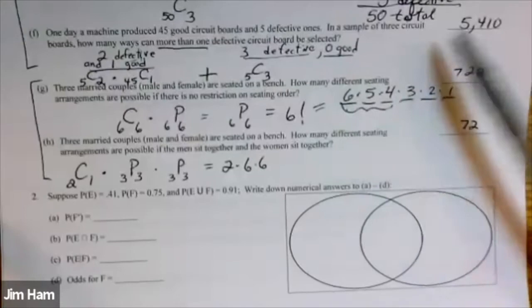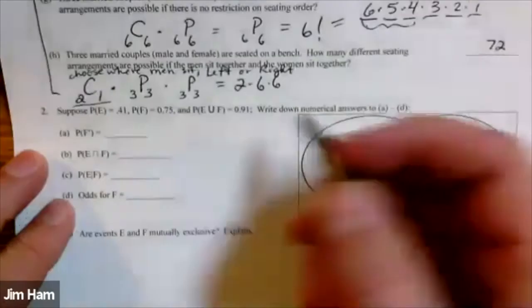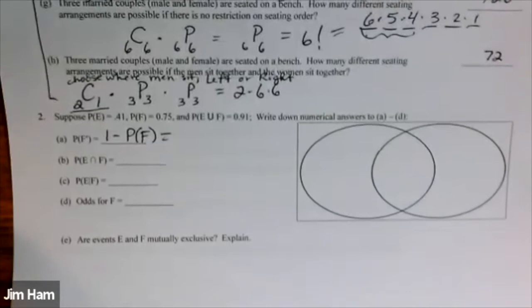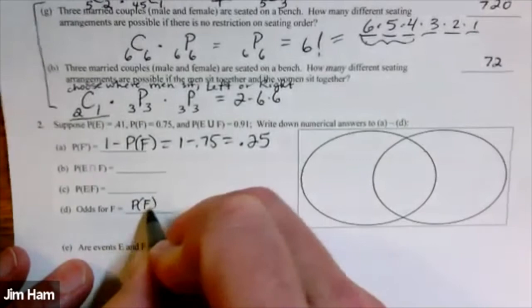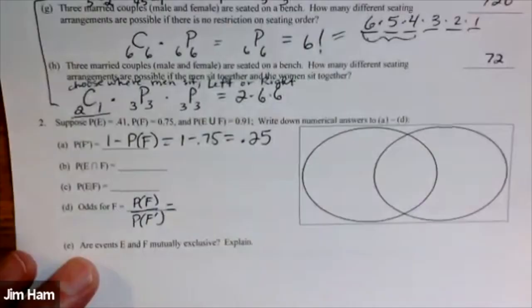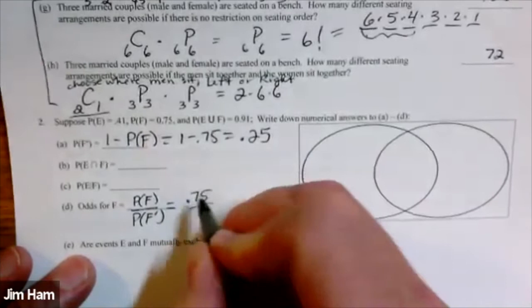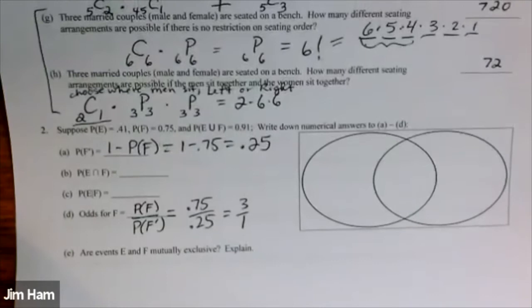You'll see some abstract problems where you put numbers into a Venn diagram and answer all kinds of probabilities. Sometimes if given these, write down the formula: the probability of F complement is one minus the probability of F. Odds for F is the probability of F divided by the probability of F complement. The probability of F is 0.75, and the probability of F complement is 0.25. So odds for F would be 3 over 1. The odds against F would be 1 over 3.